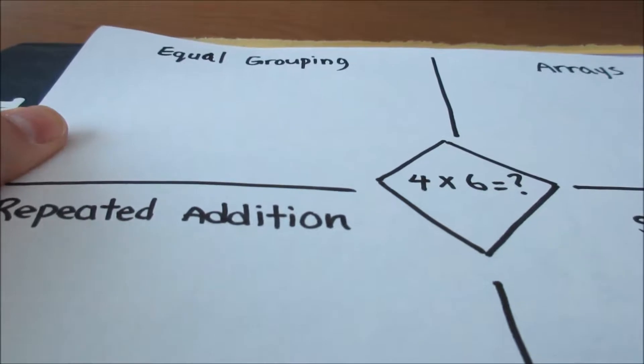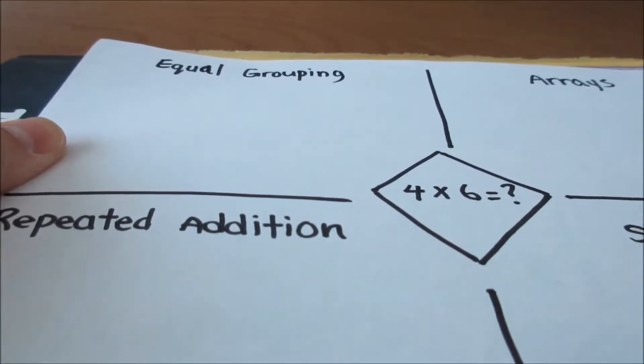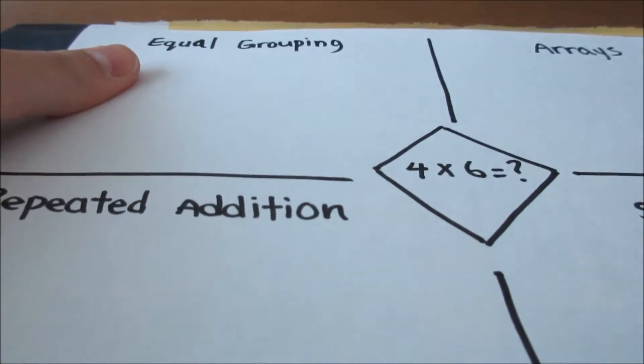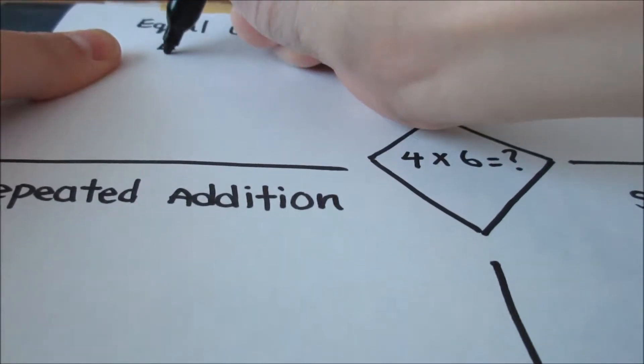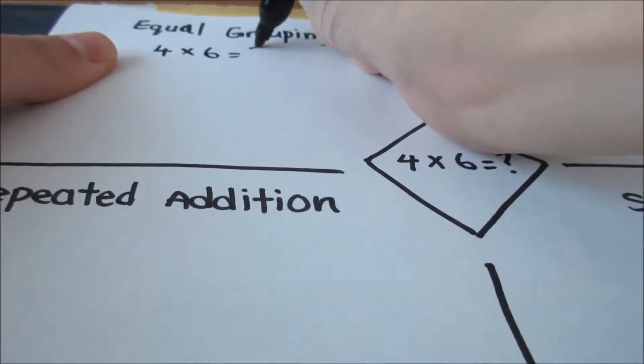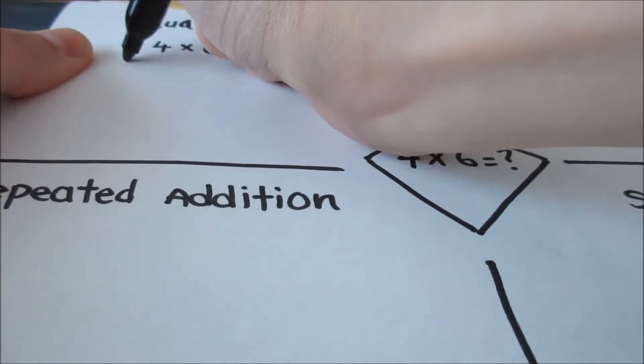We're going to start with equal grouping. When you do equal grouping, you think I have this many groups of such a number. For example, I have 4 times 6 is equal to what number?